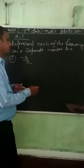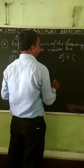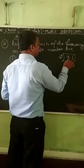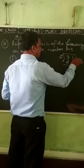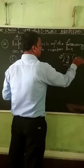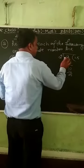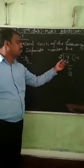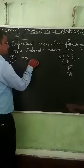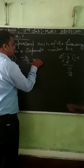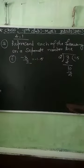To convert -3/2 to decimal: 2 goes into 3 once, and 3 minus 2 is 1, giving 1.5. So minus 3 by 2 equals minus 1.5. Now draw the number line.